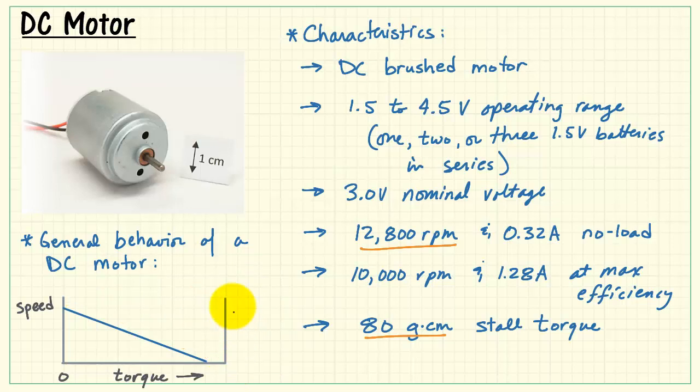Now the second parameter that I wanted to plot as a function of torque is the current demanded by the motor. Here we see at no load, it's 0.32 amps, and at maximum efficiency, it's 1.28 amps. Turns out that the current is also approximately linear.